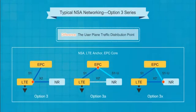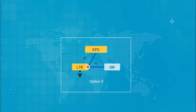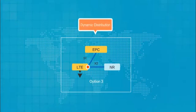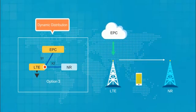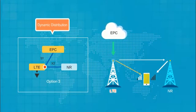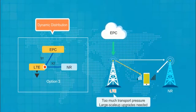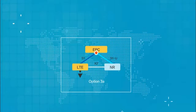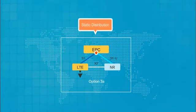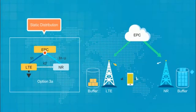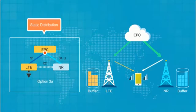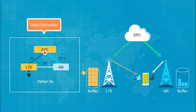However, there are differences. In each option, the service data on the user plane is handled differently. In Option 3, the user plane traffic distribution is handled on the LTE base station side and is dynamic — traffic is dynamically allocated to LTE or NR base stations based on signal quality. However, this puts a lot of transport pressure on existing LTE sites, requiring large-scale upgrades. In Option 3A, the user plane traffic distribution is handled statically on the EPC side, distributed between LTE and NR in a fixed proportion regardless of signal quality, which results in a user experience that is not as good.